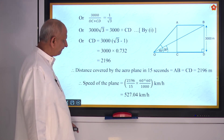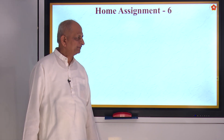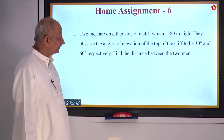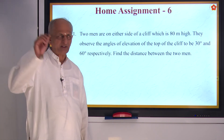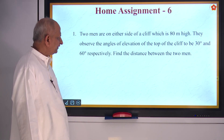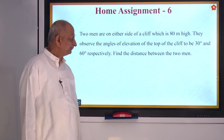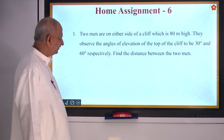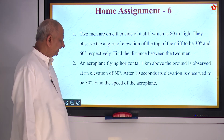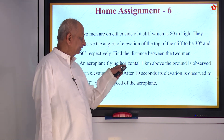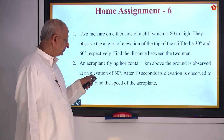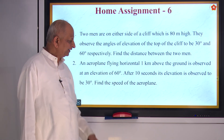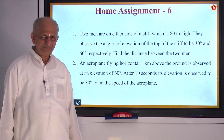Now for home assignments. First question: two men are on either side of a cliff 80 meters high. They observe the angle of elevation of the top of the cliff to be 30 and 60 degrees respectively. Find the distance between the two men. Second question: an aeroplane is flying at a horizontal height of 1 kilometer above the ground. It is observed at an angle of elevation of 60 degrees; after 10 seconds its elevation is observed as 30 degrees. Find the speed of the aeroplane — same type as what we just did.